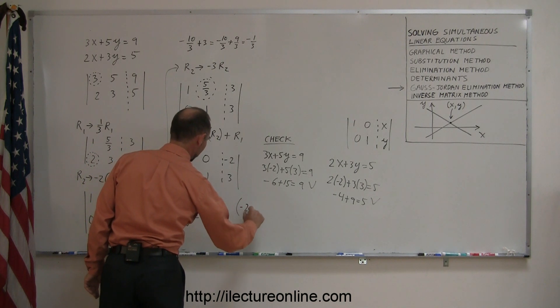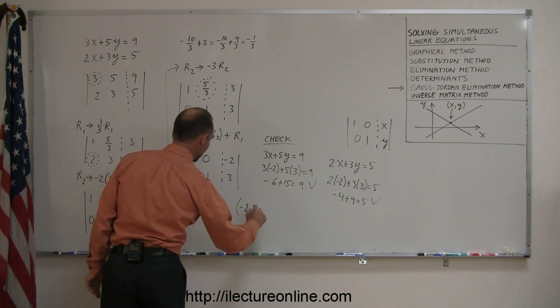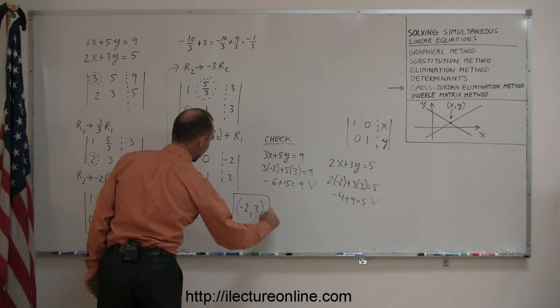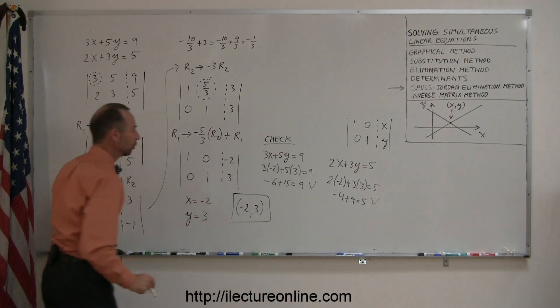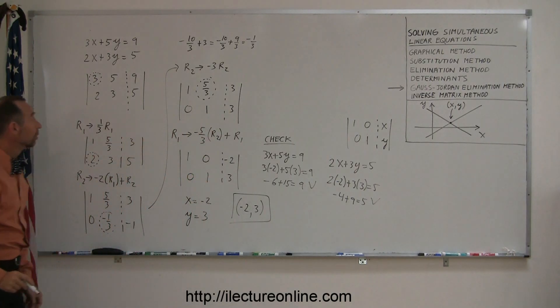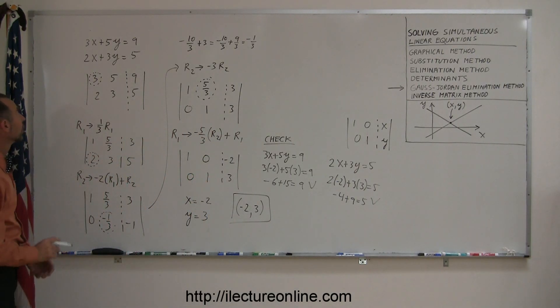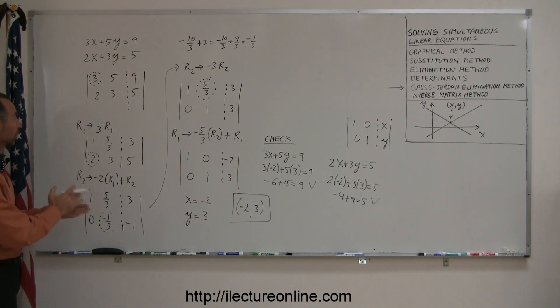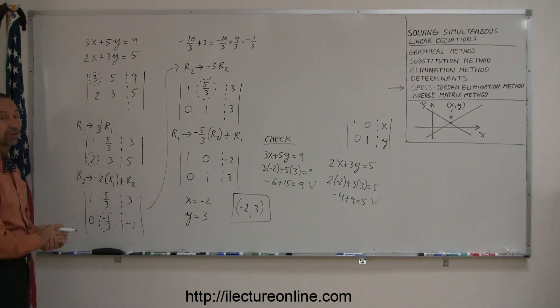You can also write it like this: x equals negative 2, y equals 3. That's my solution to those two equations — the point where the two equations cross.